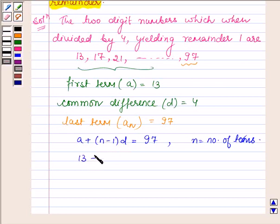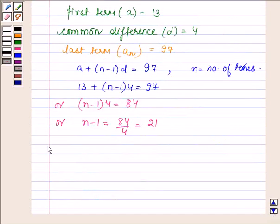So a is 13 plus n minus 1 into 4 is equal to 97, or we have n minus 1 into 4 is equal to 97 minus 13 gives 84, or n minus 1 is equal to 84 upon 4 which is equal to 21, or we have n is equal to 21 plus 1 that is 22. And now we have to find the sum of these 22 terms of the sequence.